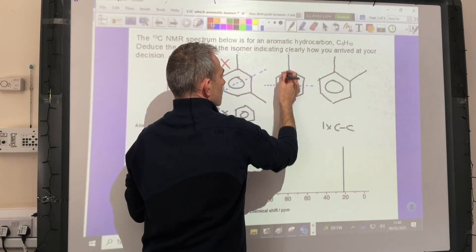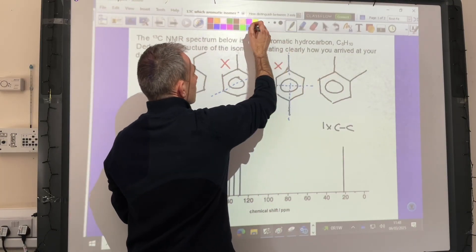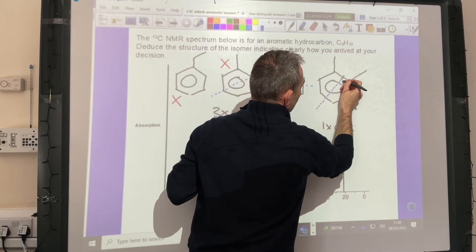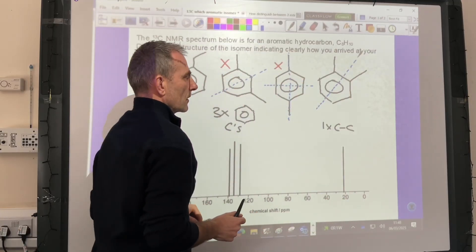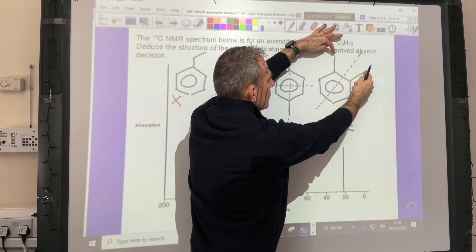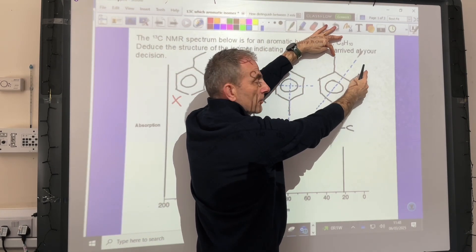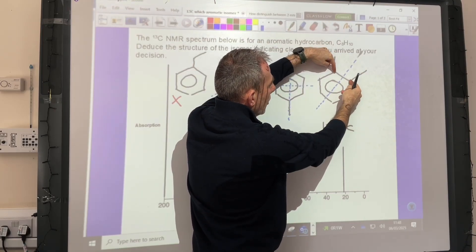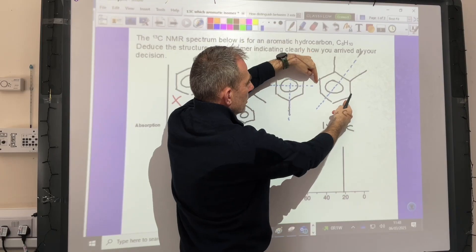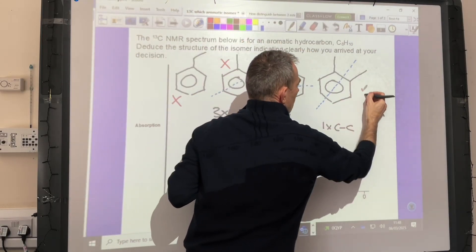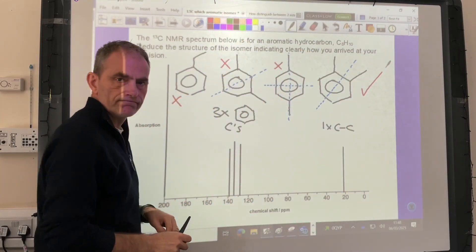It's got to be this one. We'll just show why. Line of symmetry is here. In terms of the carbon-carbon environment, we've got one - they're equivalent to each other. And then benzene carbons: one, two, three. There it is there. So that was the right answer.